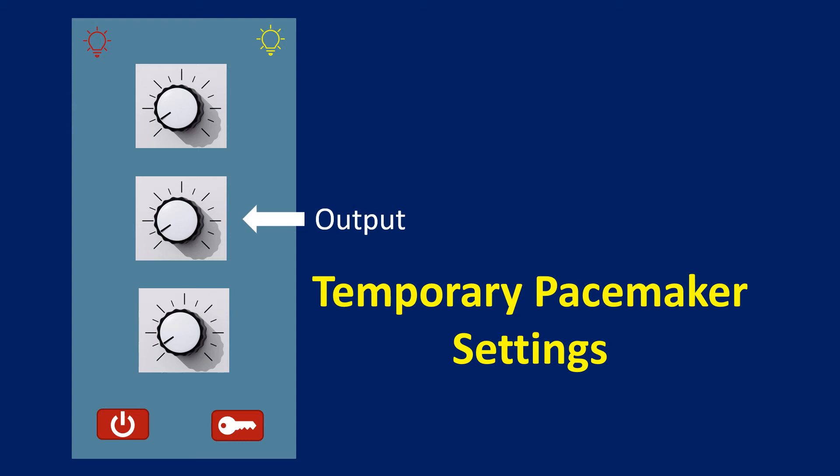Pacing output setting is decided after testing the pacing threshold. Threshold is checked by gradually reducing the output until pacing capture is lost, and then quickly raising it back. Usually, output is set at 3 times the threshold for temporary pacemakers. Higher safety margins may be used if the patient is restless and likely to have lead displacements. Threshold should be checked at least once daily to ensure a good safety margin.